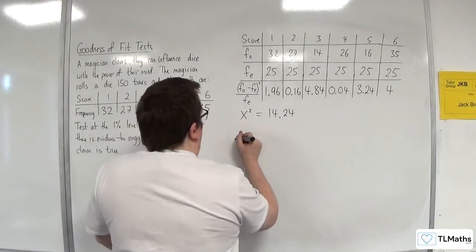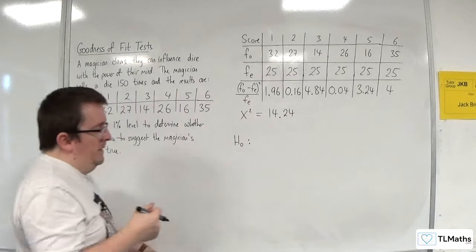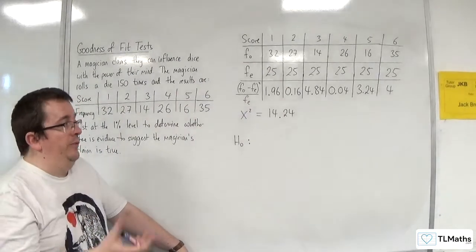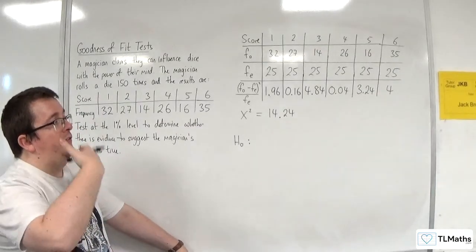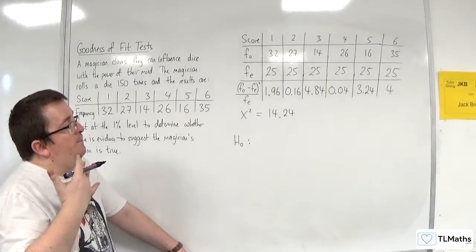Okay. So, we've got the statistic we need. Right. So, how does the hypothesis test go? Well, when we were doing the chi-squared contingency table test, we would do this as there is no association between, there is some association between.